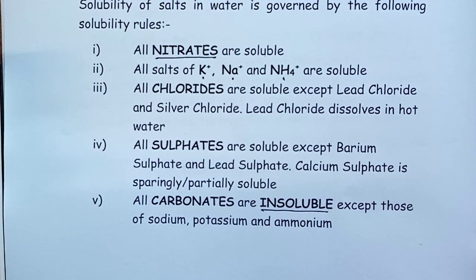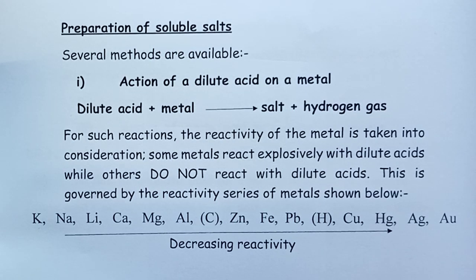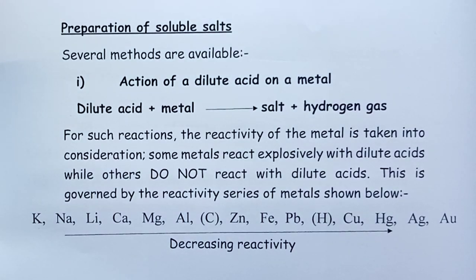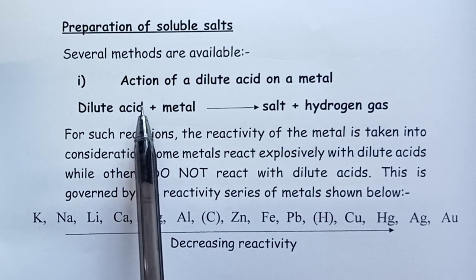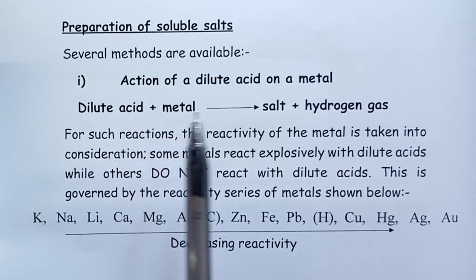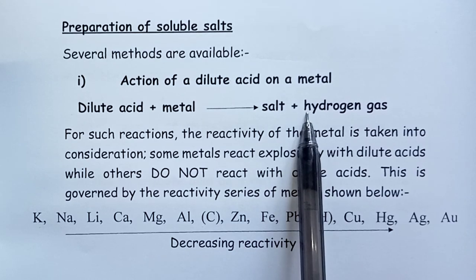Once we have determined whether our salt is soluble or not, we can design a suitable method of laboratory preparation. For soluble salts, one method is the action of a dilute acid on a metal. We know from Form One that a dilute acid reacts with a metal to form a salt and hydrogen gas.